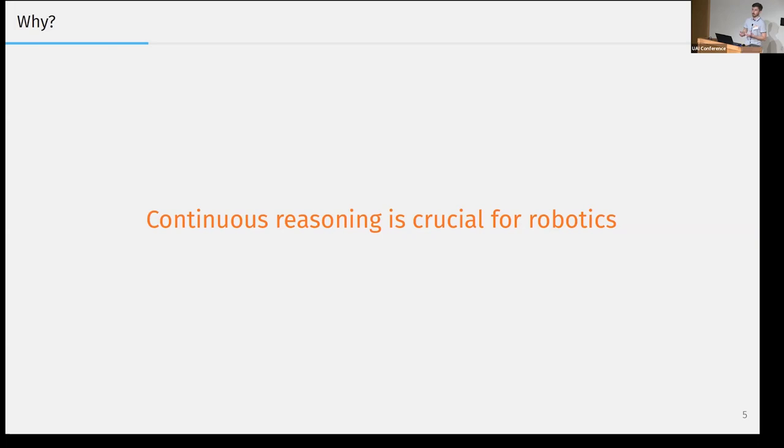Now, why is the addition of continuous reasoning so important? The main advantage or the main goal that we see is an application in robotics. Imagine a robot that has to navigate its three-dimensional environment. Then locations in this environment are already continuous, adding uncertainty due to sensory noise yields continuous random variables, and it is also very likely that the robot has to adhere to certain safety constraints, and constraints that should be or could be encoded in a logical way.